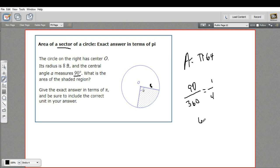So we'll take 64 pi, that's the whole circle, and multiply it by 1 fourth. Multiplying by 1 fourth is the same as dividing by 4. This equals 16 pi.